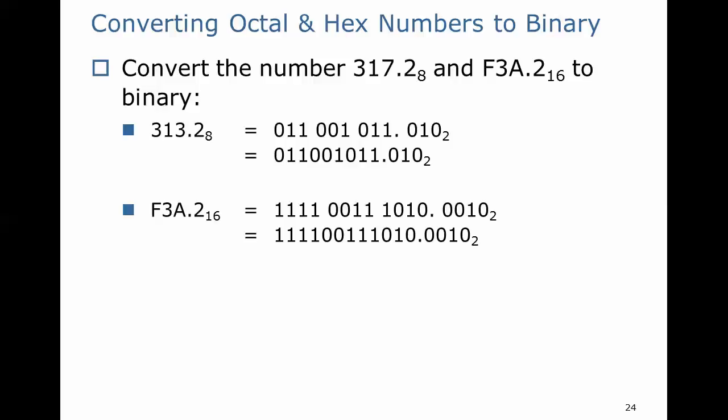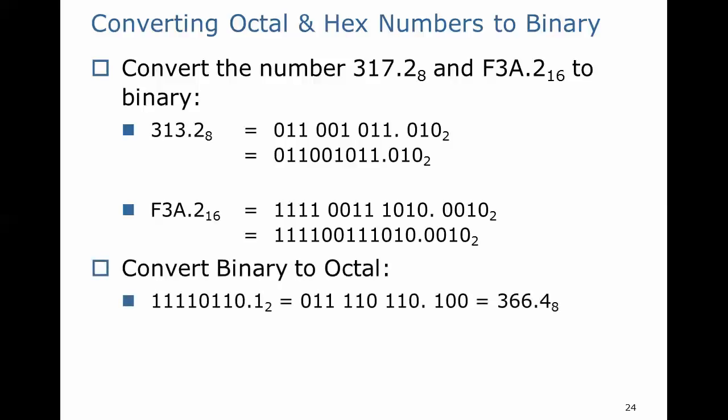If you were doing the reverse, you would take a binary value, and if you're converting to hexadecimal, you simply would separate or group the binary digits in groups of 4, and then each group of 4 would be converted to its equivalent hexadecimal value.